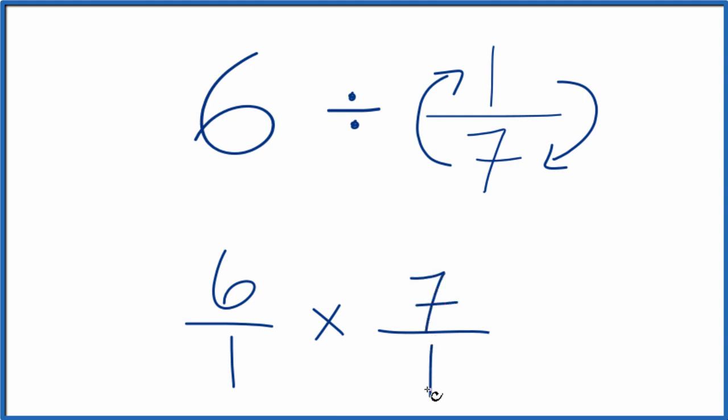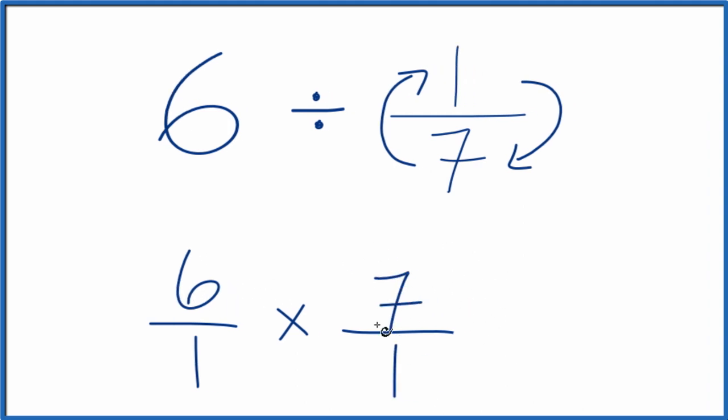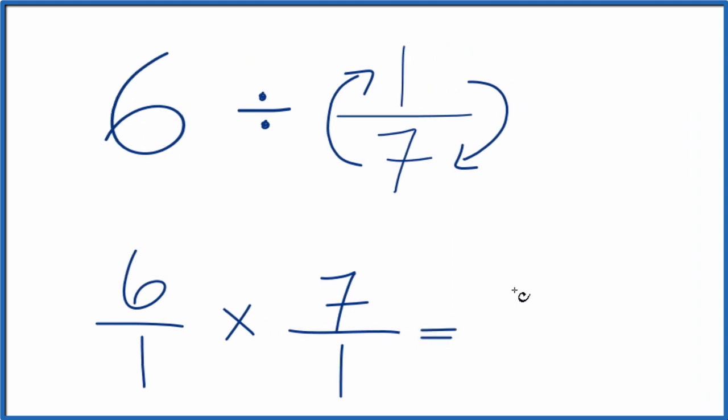So 7 over 1, that's our reciprocal. Now when we multiply fractions, we multiply the numerators and then the denominators. 6 times 7, that's 42. 1 times 1 is 1. And 42 divided by 1 is 42.